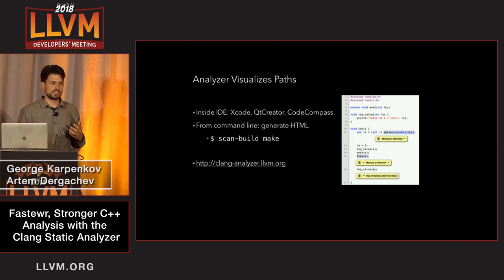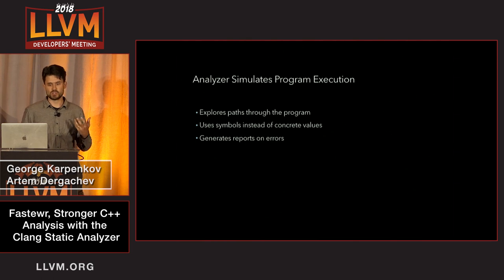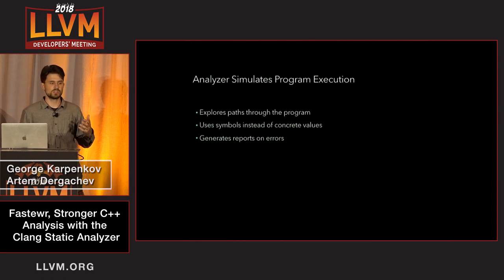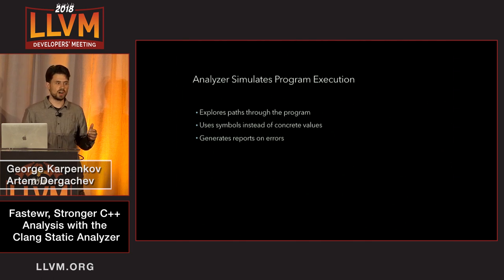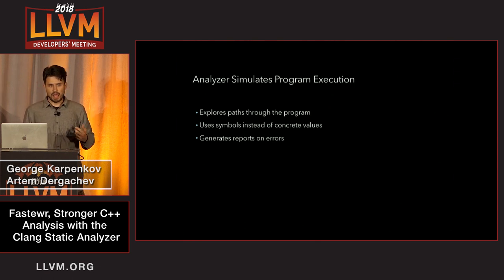The Clang Static Analyzer works by simulating program execution. It runs what is called symbolic execution, which explores paths through the program. Unlike concrete execution, which actually has values, the analyzer uses symbols to explore the program. Whenever such exploration hits an error, the report is generated and presented to the user.